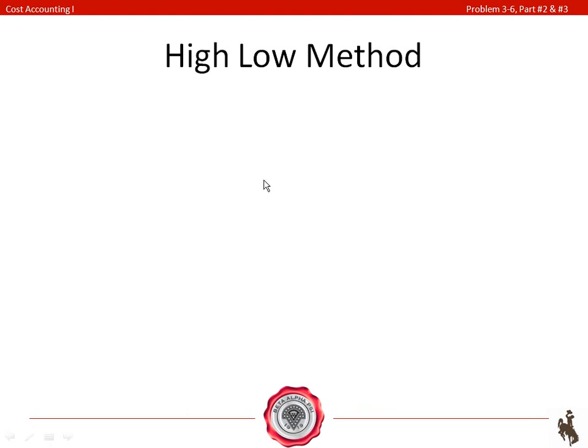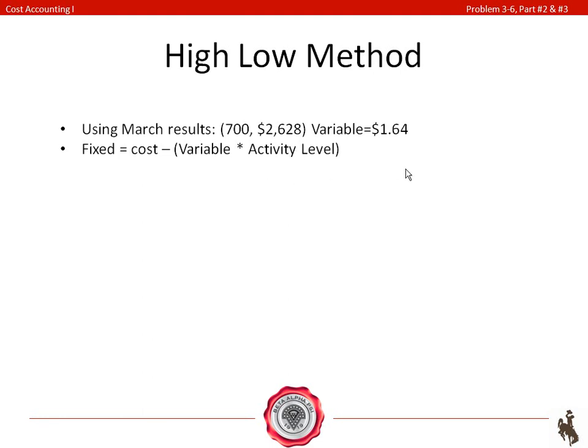Continuing on with this problem, you now need to find your fixed costs. We can use this by using our variable costs that we found on the previous slide, and either using the lowest activity level in March or the highest activity level in May. So, we're just going to go ahead and use the one in March. You have your activity level of 700 and a total cost of $2,628 and then your variable costs of $1.64. To find your fixed costs, that's your total cost minus your variable cost times activity level. You're going to have your fixed costs equal $2,628 minus $1.64 times 700. And you should get your fixed costs of $1,480.